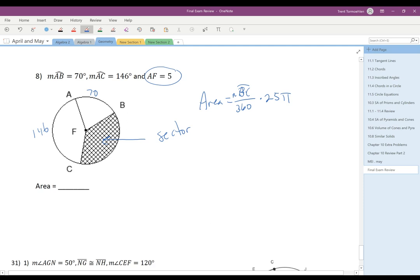All we need to do to finish this problem is find BC and then do some calculations. So 360 minus 70 is 290, minus 146 gives you 144. So you get 144 over 360 times 25π.